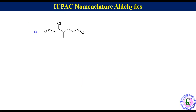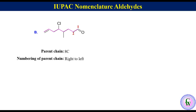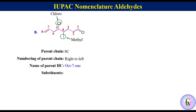Compound B — the parent chain in this molecule is the longest chain with eight carbon atoms containing CHO. Numbering of the parent chain starts from CHO, so numbering will be from right to left: 1, 2, 3, 4, 5, 6, 7, and 8. Since the parent carbon chain has eight carbon atoms with an alkene and alkyne at C7, it will be named as oct-7-en. There are two substituents: a chloro at C5 and a methyl at C4, written as 5-chloro-4-methyl.